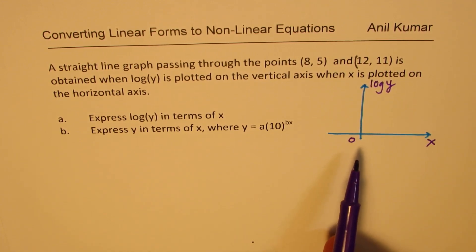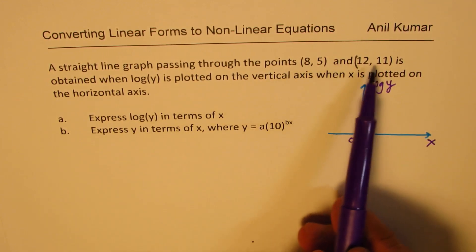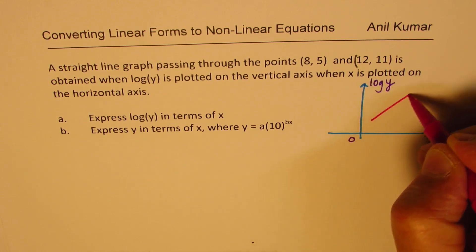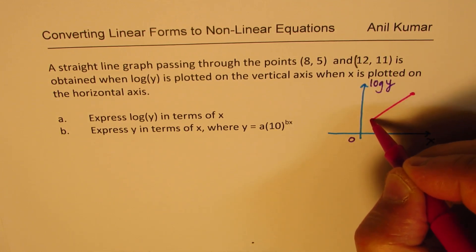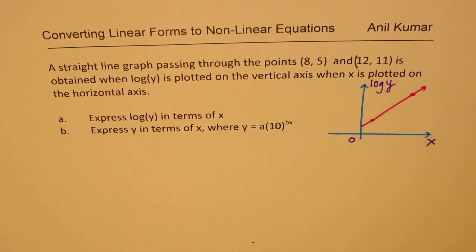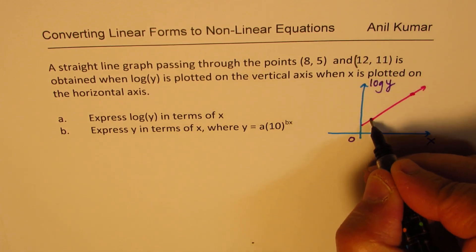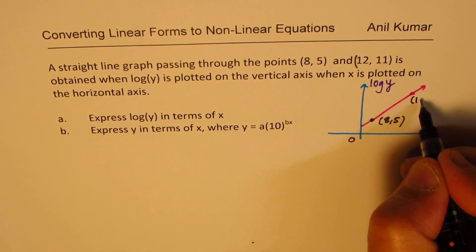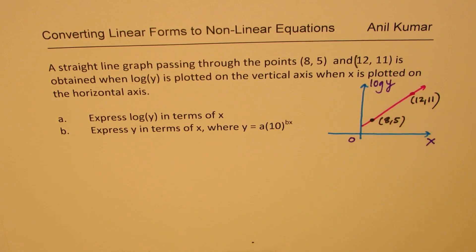In that case, there are two points and joining them is a straight line. So let me just connect these two points. It is a line which extends. However, we are given that these are the two points through which it goes: (8, 5) and (12, 11). So that is the equation for us.